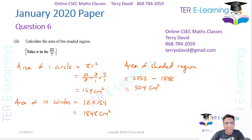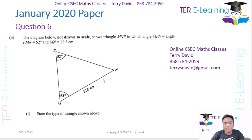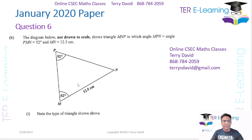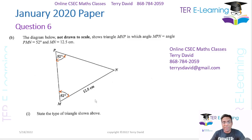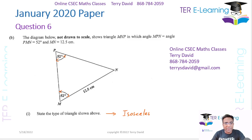So that is part A. Part B now — the diagram shows, not drawn to scale, a triangle MNP. They're telling us we have two angles that are 52 degrees each. They want to know what type of triangle this is. Since two angles are equal, this triangle is an isosceles triangle.